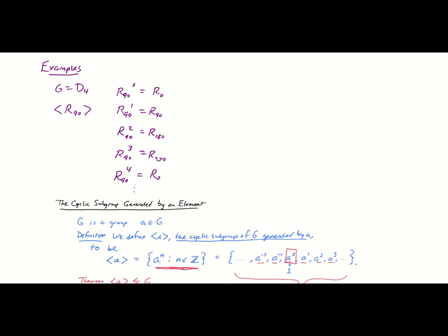And that pattern is going to continue. R90 to the fifth would be R90. R90 to the sixth would be R180, and so on. But I'm not done because I need to also consider negative powers. So what is R90 to the minus one? Well, one thing that we can notice here is that multiplying R270 by another R90 took me back to the identity. So that means that R90 inverse has to be R270.